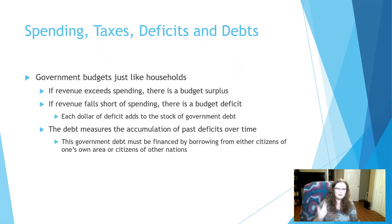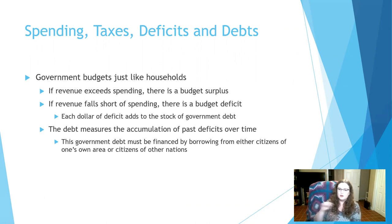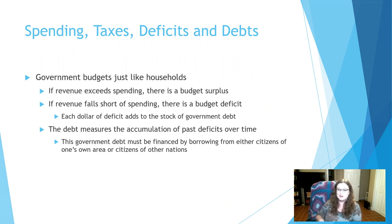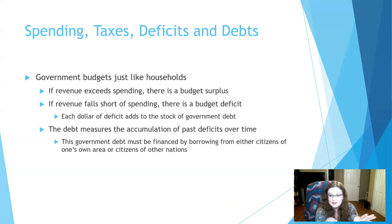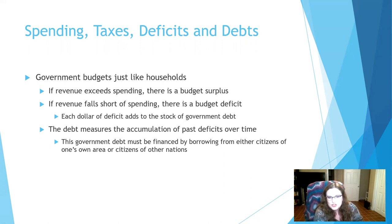At the end of the day, government budgets are just like households — money in and money out. If revenue exceeds spending, we have a surplus. If spending exceeds revenue, we have a deficit. States have to have a balanced budget, but the national government can keep spending even when there's no money there — borrowing, taxing more, or doing other things. The national government is not held to the balanced budget restriction, which means debt can go out of control very quickly.